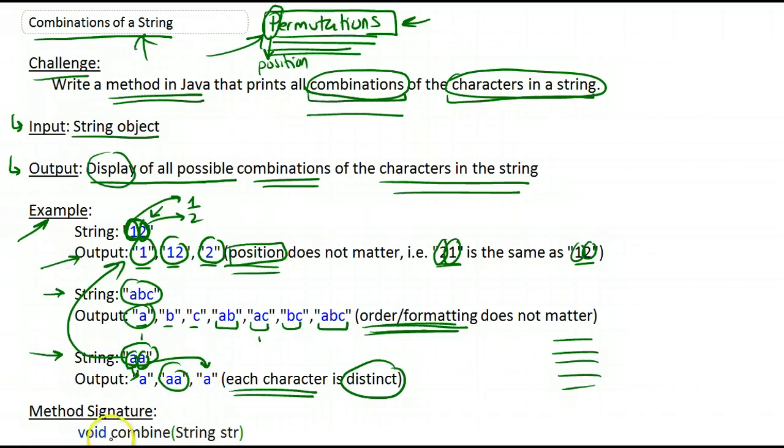And this will be the method signature for the method that you will be writing. So it's called combine, doesn't have to return anything, and it is passed a string called str.